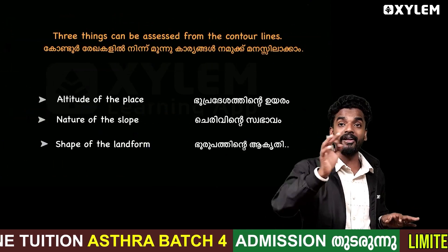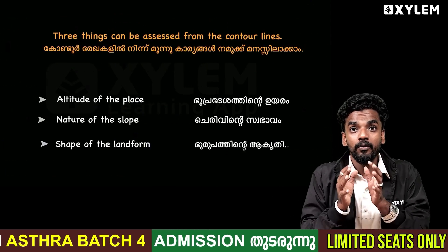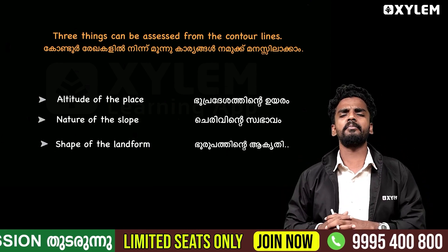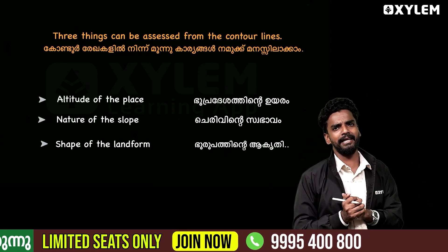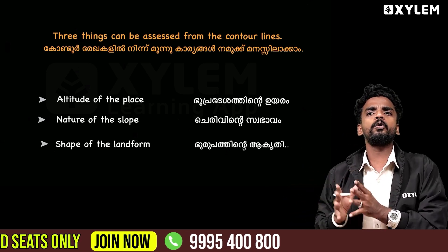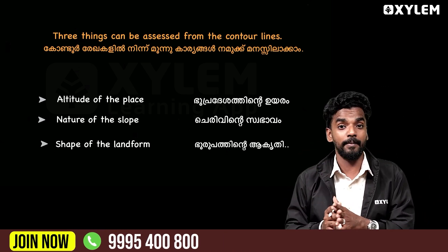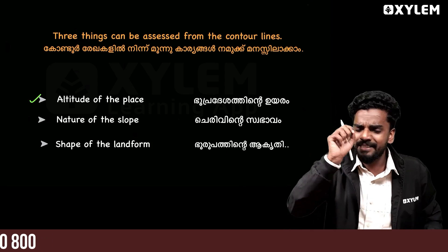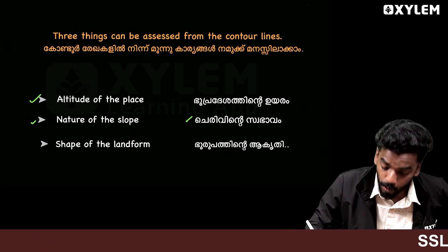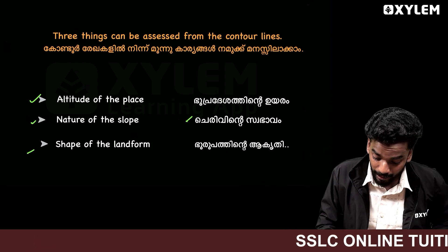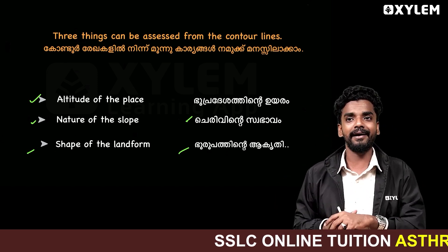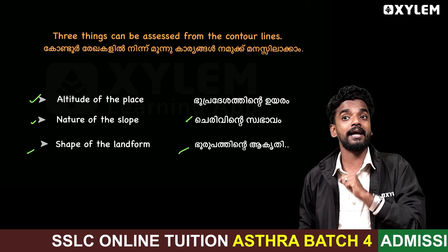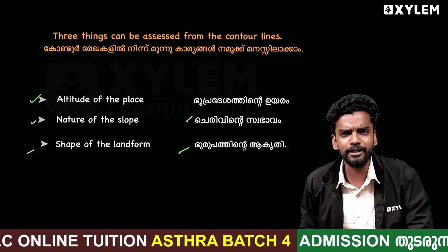Write the three things that can be assessed from contour lines. What do we need to know about contour lines? The altitude of the place, the nature of the slope, and the shape of the landform — these are the three things we need to know about contour lines.